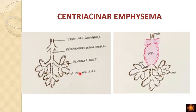To summarize: in centriacinar emphysema, the terminal bronchiole opens into the respiratory bronchiole, which opens into alveolar ducts and alveolar sacs. Only the respiratory bronchiole — the most proximal or central part — is dilated, while the distal alveolar ducts and alveolar sacs are normal. That is why it is called centriacinar.